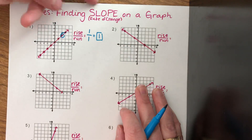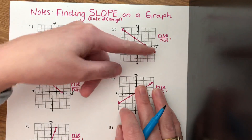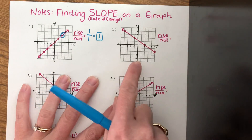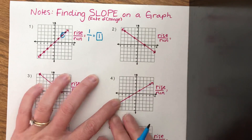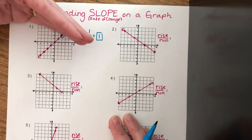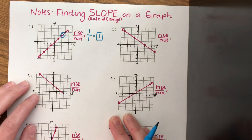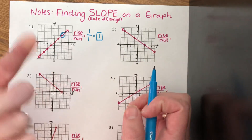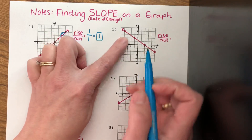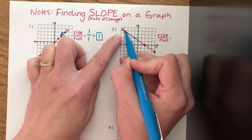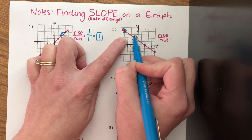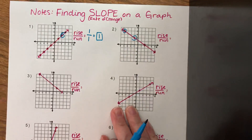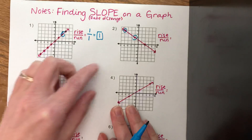Let's look at number two. Number two is going down, so before I do anything else, I know this graph is going to have a negative slope because the graph is going down. I need to find the rise over run, which is the slope. I'm going to pick two points to count between — you could pick any two, but if you pick two that are not the closest, you will have to reduce.